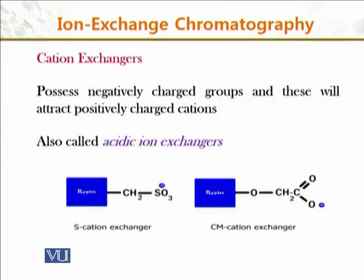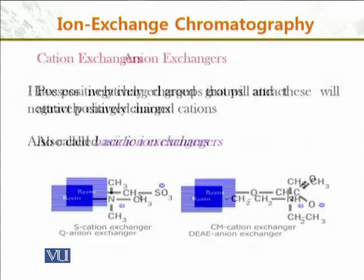In the case of an acidic ion exchanger, it possesses negatively charged groups, and these will attract positively charged cations. As shown in the diagram, with a resin there is a positively charged cation exchanger. Both of these will attract positively charged cations, and those positively charged compounds will be attracted by these supports on the resin, allowing separation to take place.